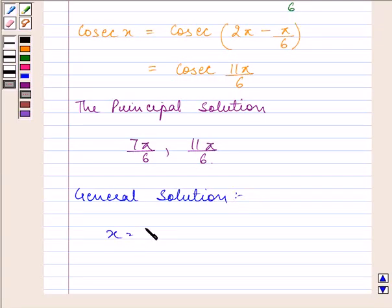As cosec x equals 1 by sin x, that means x is never equal to nπ. So it will be nπ plus minus 1 to the power n, and this is the general solution in case of cosec x where we write it as x equals nπ plus minus 1 to the power n...